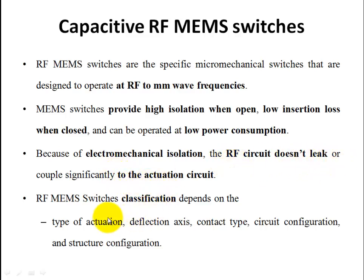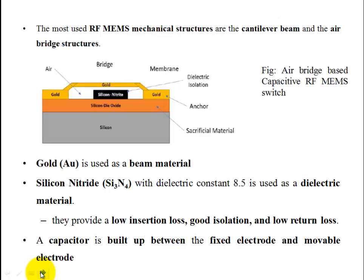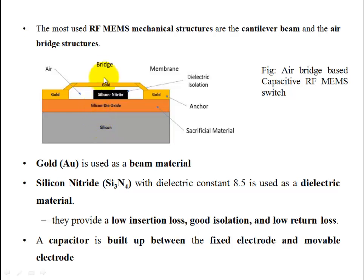RF switches are classified based on the type of actuation, deflection axis, contact type, and circuit and structure configuration. For mechanical structures, either cantilever beam or air bridge structures are used. A capacitive RF MEMS switch makes use of an air bridge structure.